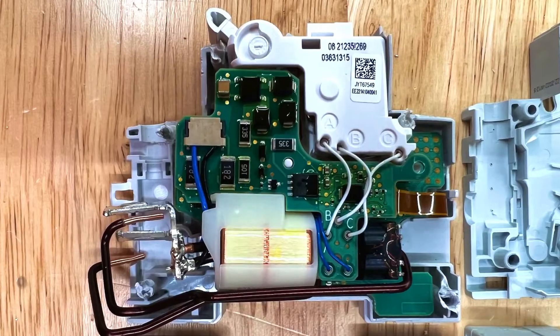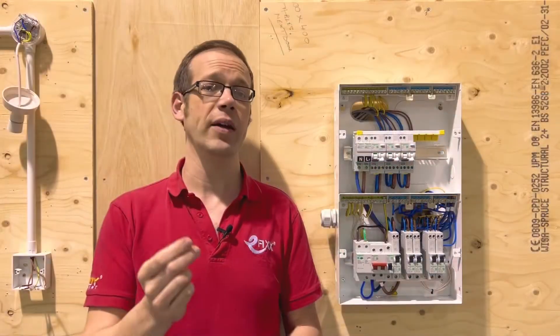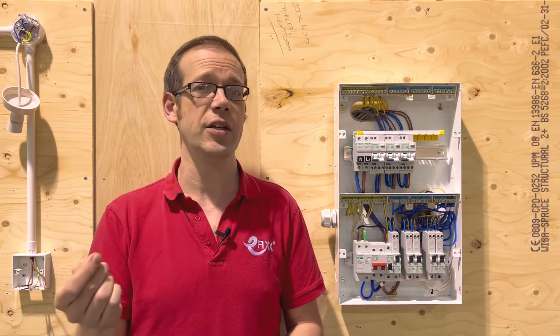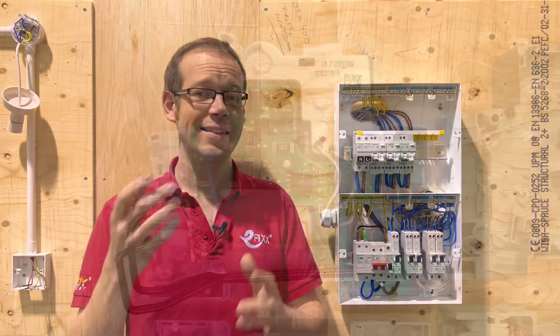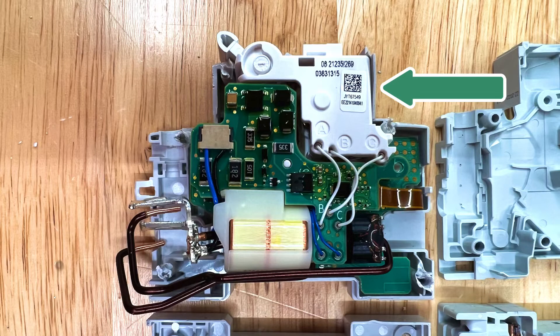Inside the device there is a circuit board that is loaded with software that monitors how the shape of the current waveform is behaving. Then when it sees a distorted waveform that matches the known signature of an arc being formed it sends a signal to the mechanical tripping system inside the device to disconnect the circuit.